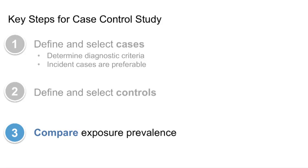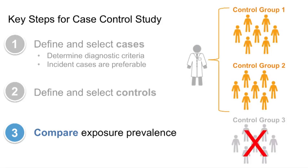Recall that the total number of exposed persons in a case control study is not the same as the total number of exposed persons in the source population. The same is true about the number of non-exposed in a case control study. Thus, the denominators obtained in a case control study do not represent the total number of exposed and non-exposed persons in the source population. The investigators arbitrarily decide how many controls will be selected to compare with the cases. As a consequence, we cannot measure risks or rates in a case control study directly because the population at risk — the denominator — is not ascertained. Instead, we use a measure called an odds ratio.